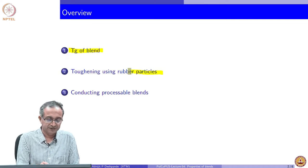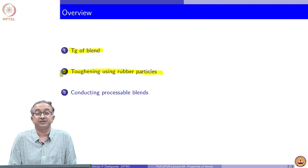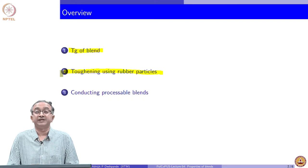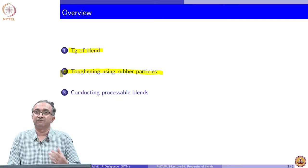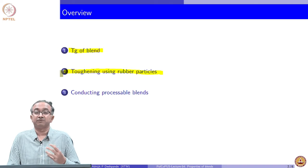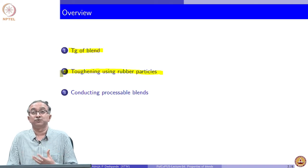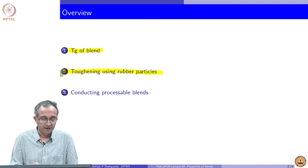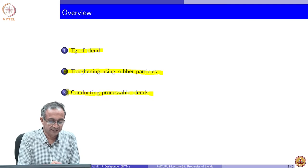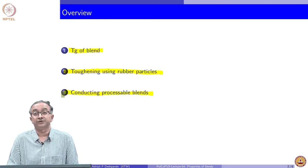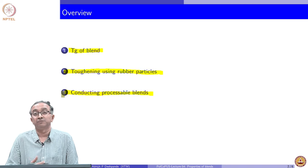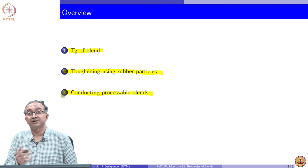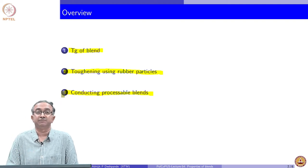An important aspect during impact strength discussion was the toughening that happens due to addition of rubber particles. We will take a closer look at some of the properties that change when you do rubber particle addition, for example, in epoxy. Similarly, blending is also done for introducing conductivity as a property which may not be there in one of the polymers. You can make a conducting blend by incorporating a conducting polymer in a non-conducting polymer.